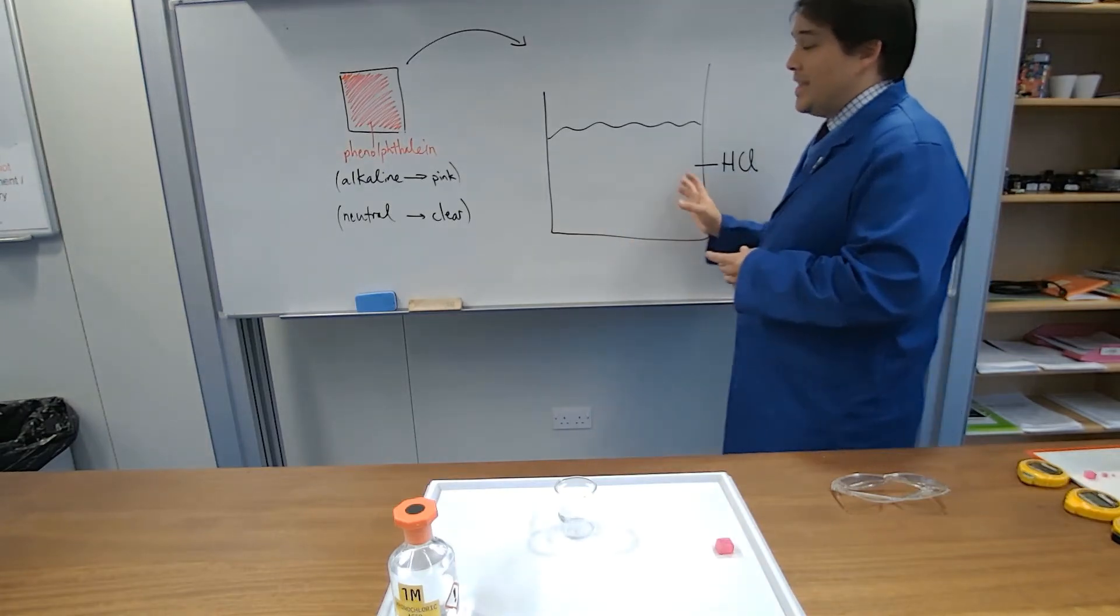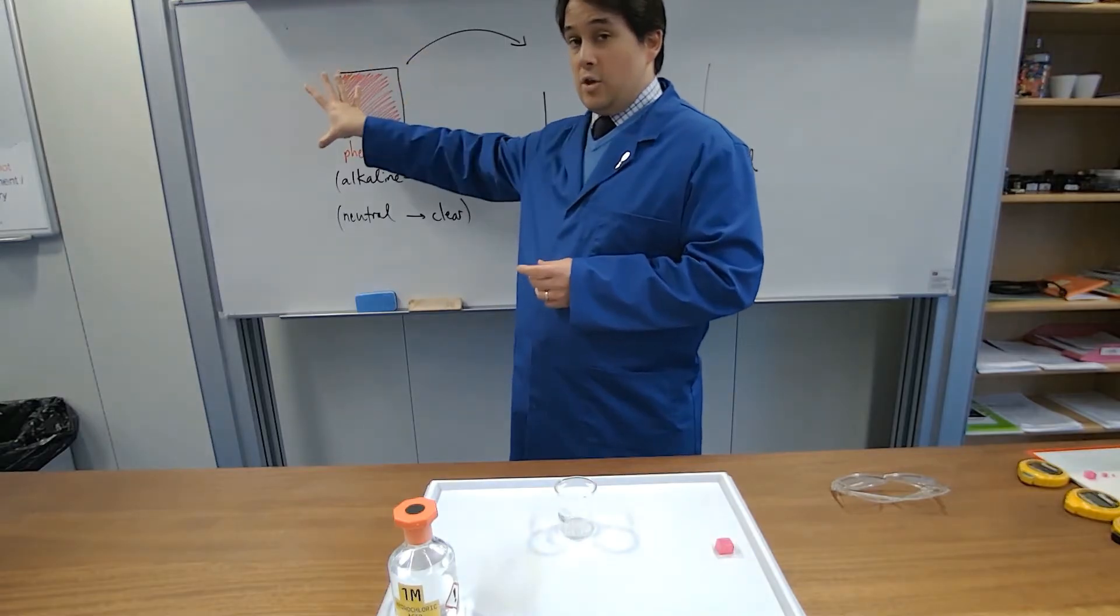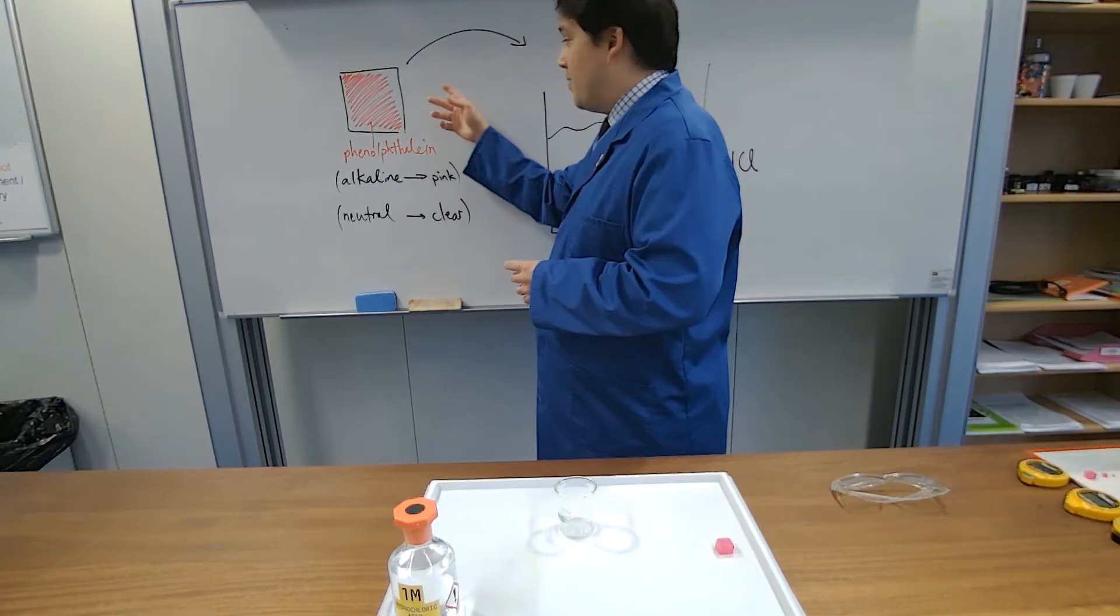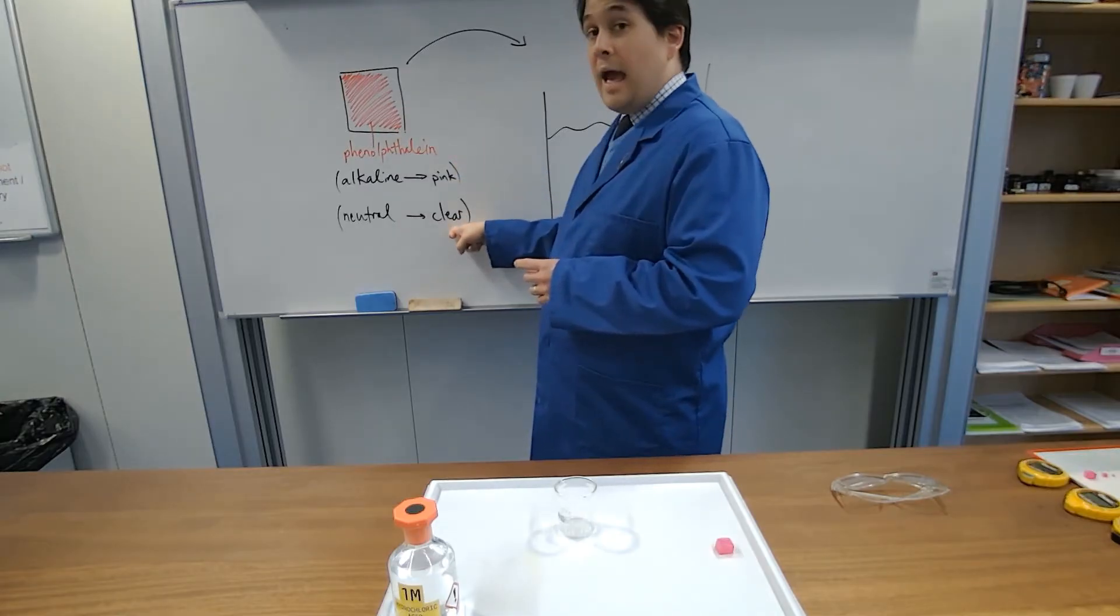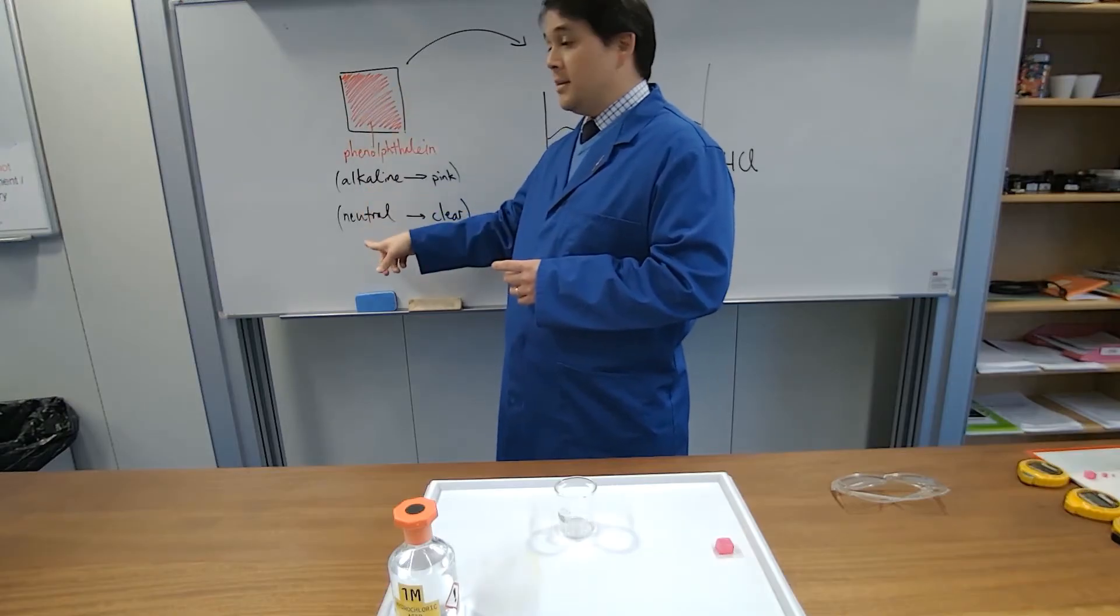When it moves in, it meets with the alkaline already present in the cube. It therefore turns the cube more neutral, and the color should change from pink to clear as the solution inside turns from alkaline to more neutral.